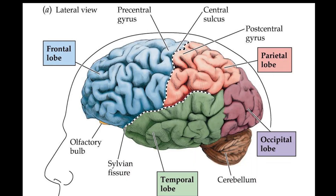The most anterior rounded part of the frontal lobe, though not well defined, is known as the frontal pole, one of the three poles of the cerebrum. The frontal lobe is covered by the frontal cortex. The frontal cortex includes the premotor cortex and the primary motor cortex, parts of the motor cortex. The front part of the frontal cortex is covered by the prefrontal cortex.